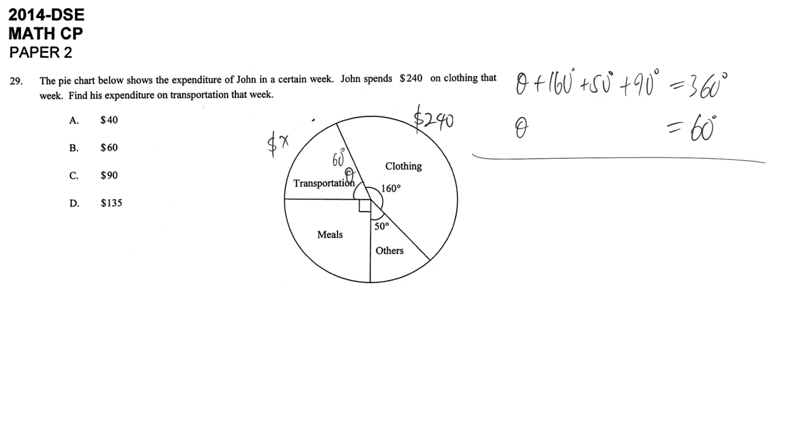Now we're going to use the same ratio. The ratio between angle and actual spending value is constant throughout the whole pie chart. So spending in clothing divided by angle of clothing should equal another sector: the spending in transportation divided by the angle in transportation.